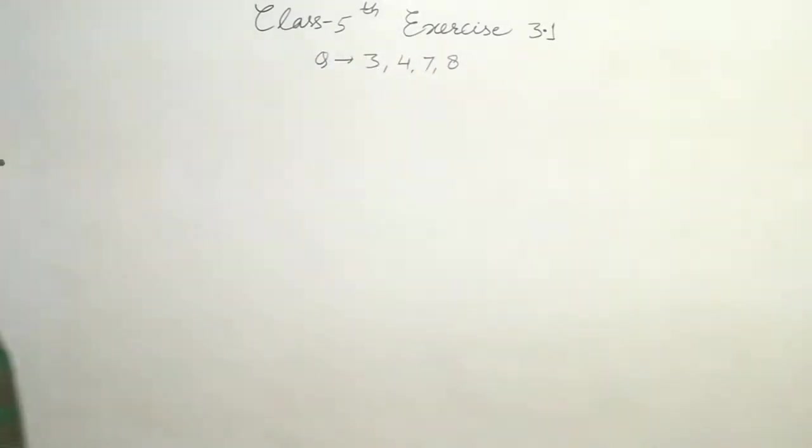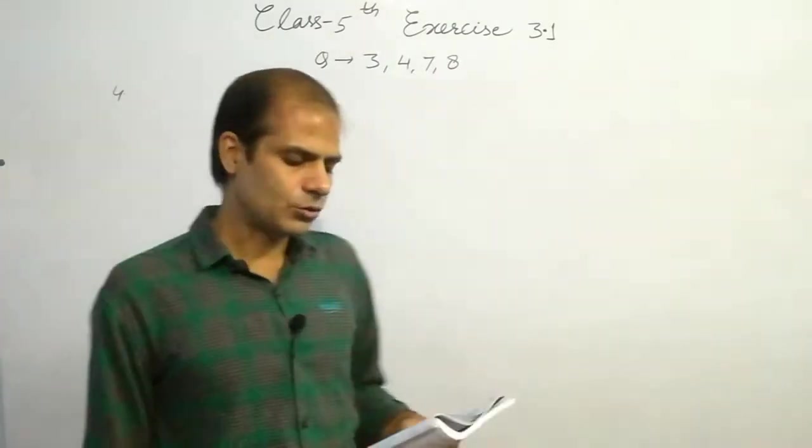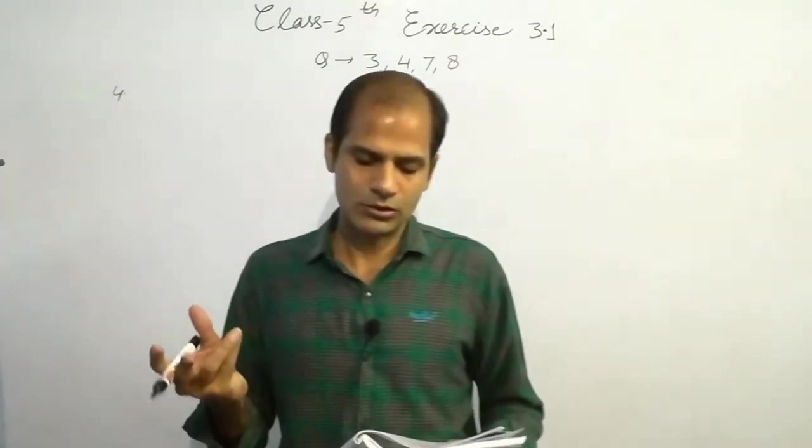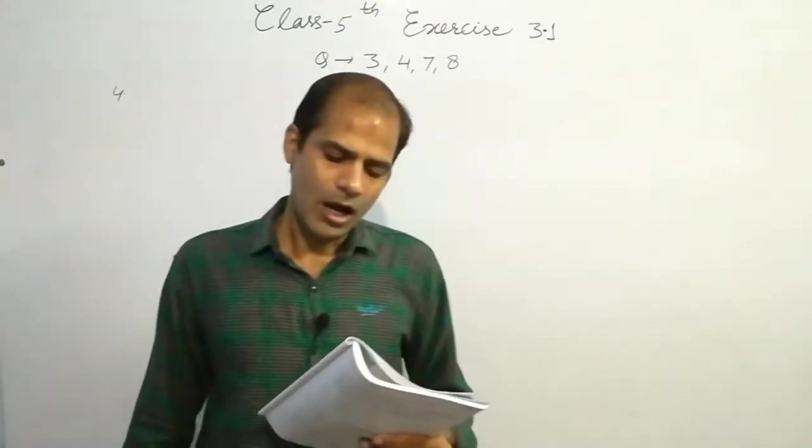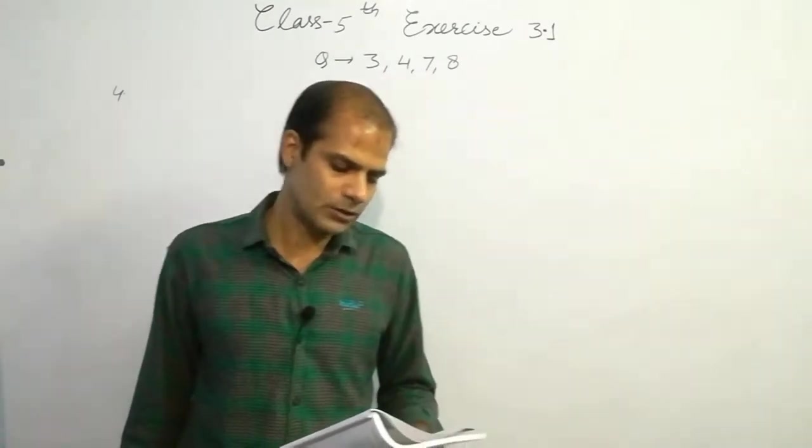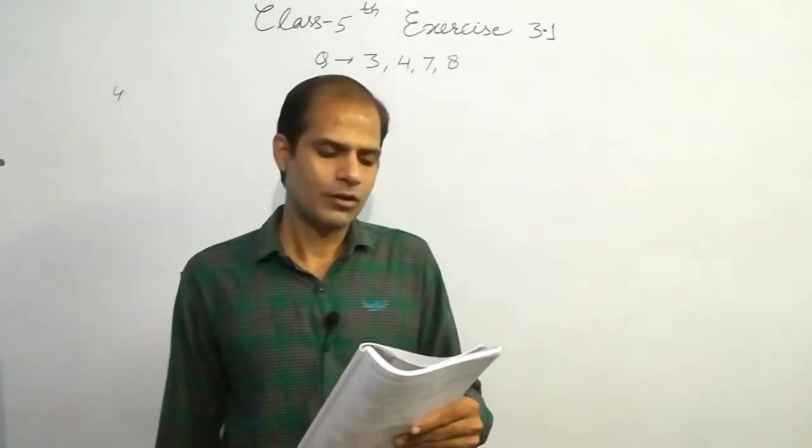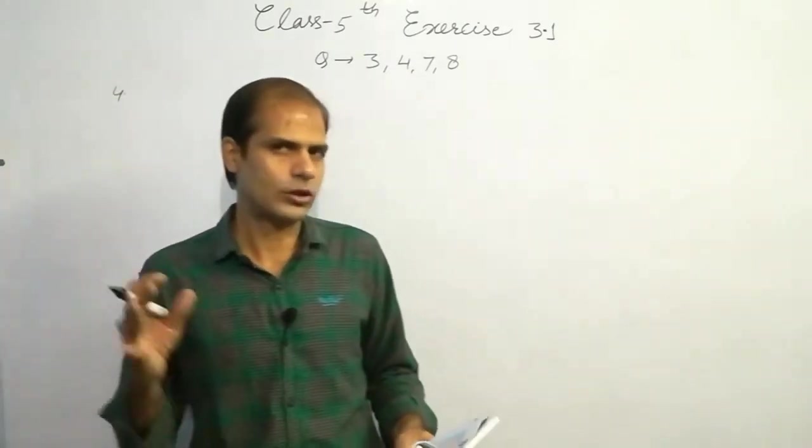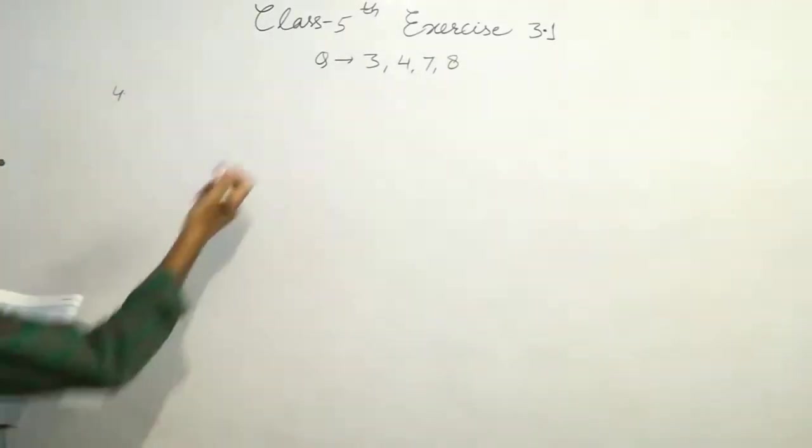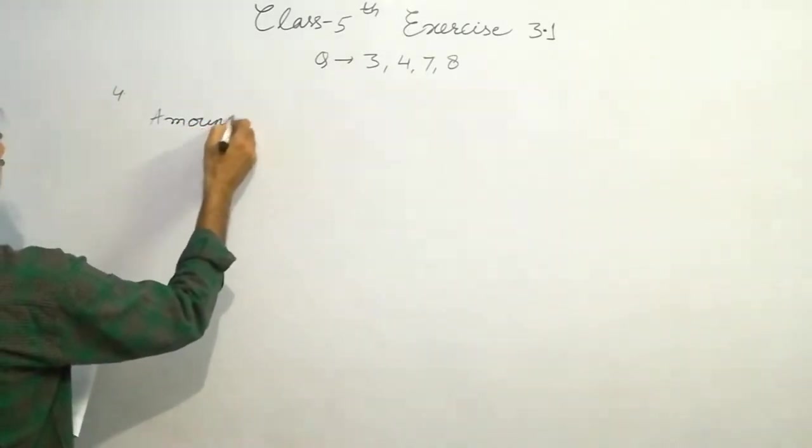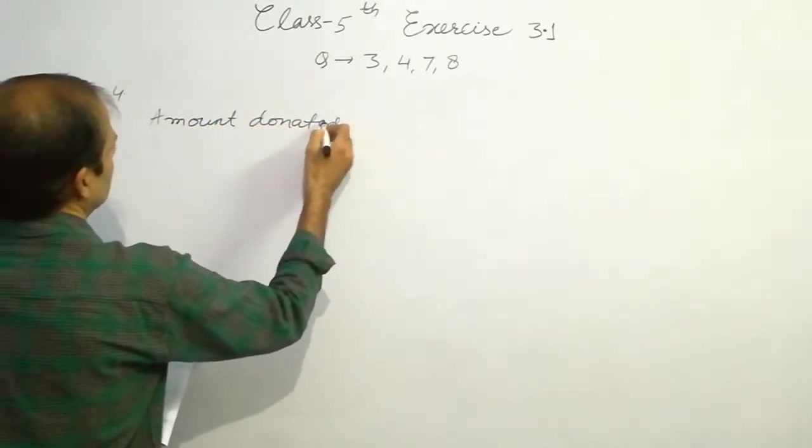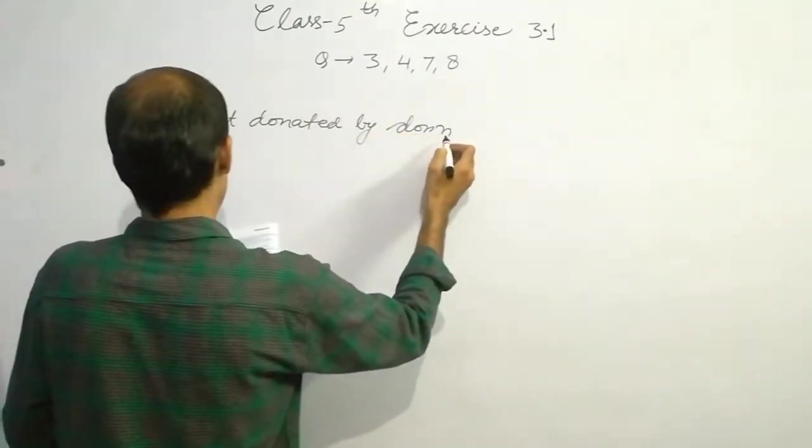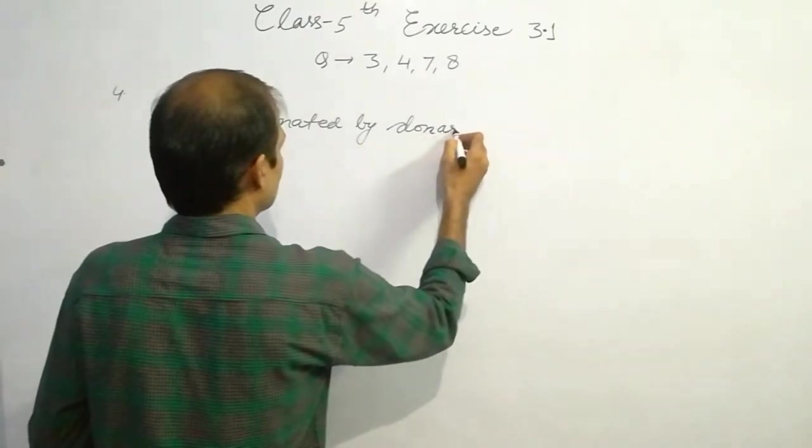Question number 4 on page number 22. See, what is the question? There are 165 students in government senior secondary school Tada. A donor donates Rs. 550 per student for uniform. State the amount donated by donor. Again, the information for one is given and it is required for many. So it is the case of multiplication. Amount donated by donor equals, so it is rupees.